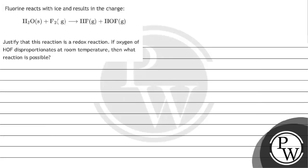Let's read this question. The question says fluorine reacts with ice and results in a change. This will be a reaction. Justify that this reaction is a redox reaction. If oxygen of HOF disproportionates at room temperature, then what reaction is possible?